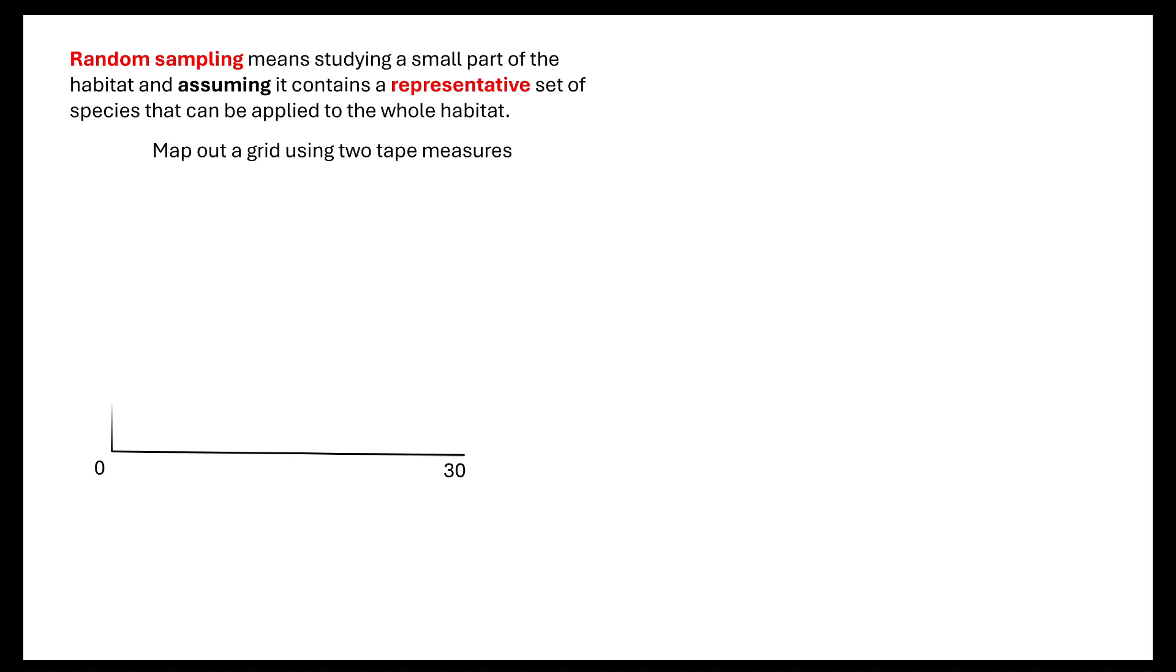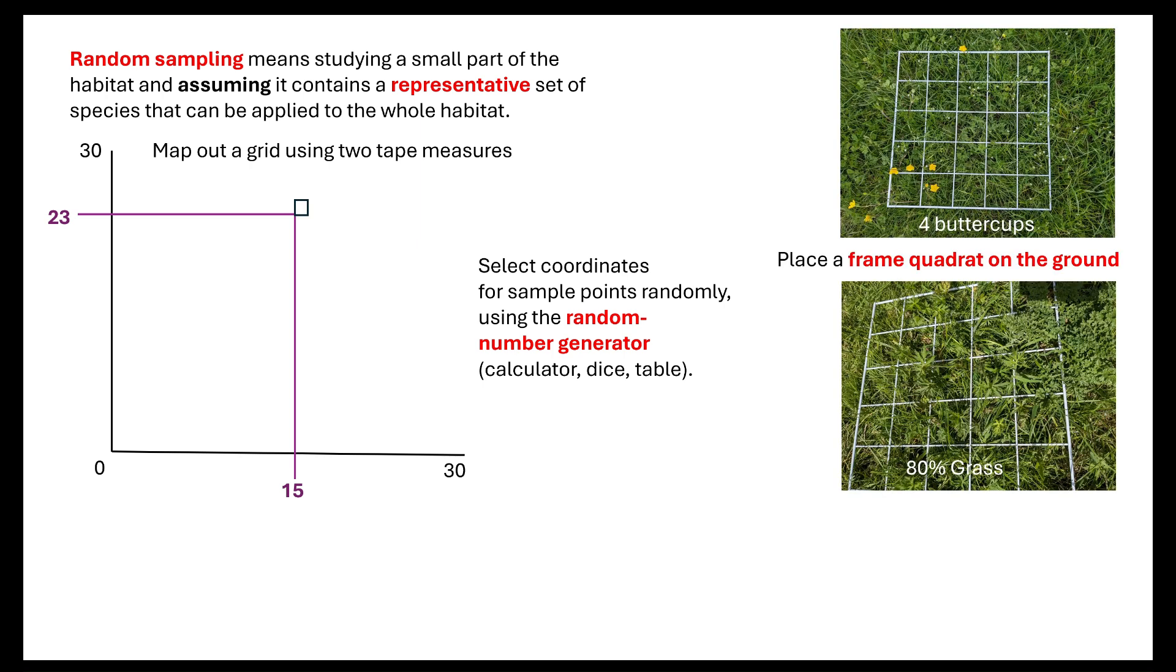To be able to sample an area you want to map out a grid using two tape measures. You will then select coordinates for the sample points that are going to be used randomly. You do this through using a random numbers generator either a calculator, dice, or table. It's important to note that wherever those coordinates are going to land is where you're going to place down that frame quadrat.